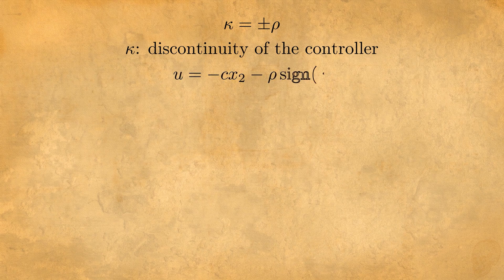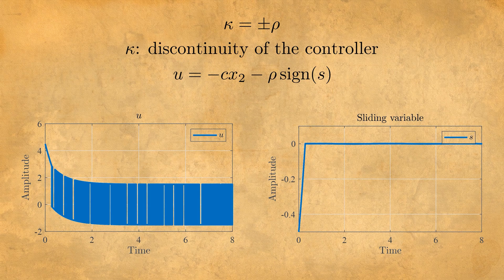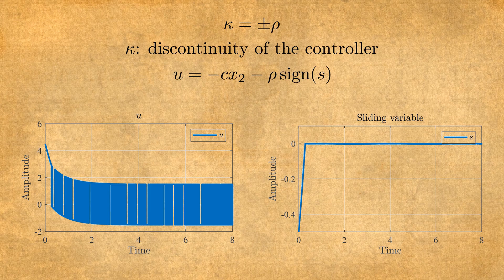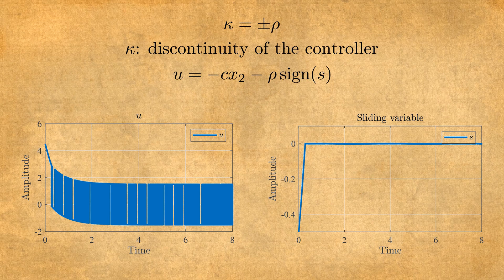Our controller is then u equals minus cx2 minus rho sign s. And as we can see the control u chatters a lot between minus 1.5 and 1.5 and our sliding variable reaches 0 in very very short time. Thus it means our system is stable.